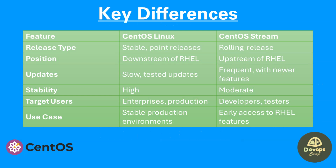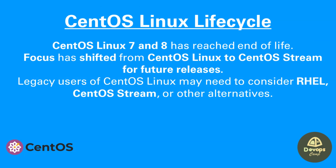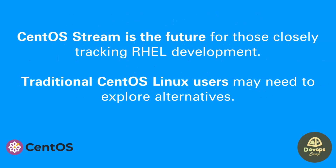The following table points out the key differences between CentOS Linux and CentOS Stream. The focus of the CentOS project team has shifted towards CentOS Stream from CentOS Linux. CentOS Linux 7 and 8 have reached end of life. Therefore, users of CentOS Linux are advised to consider moving to Red Hat Enterprise Linux or CentOS Stream, as CentOS Stream is the future for those who seek continuous developments in Linux technologies.